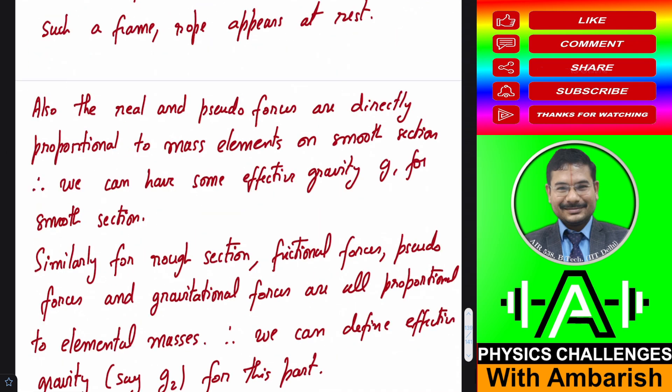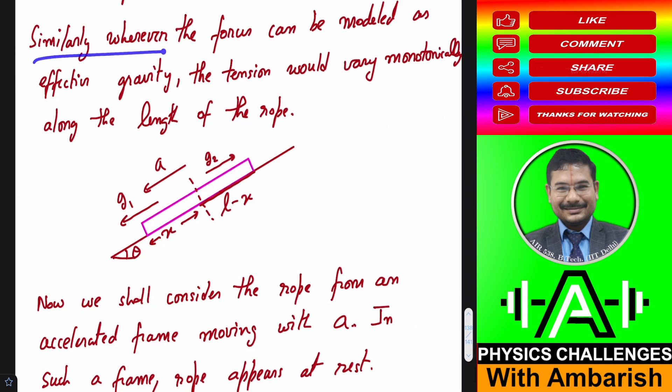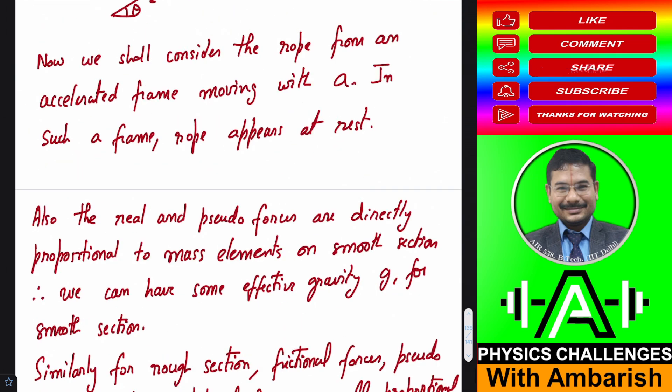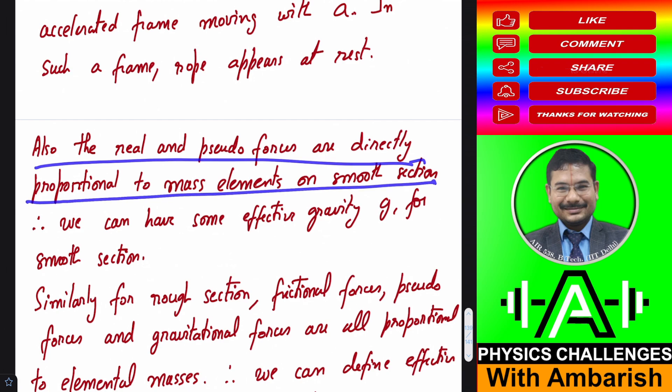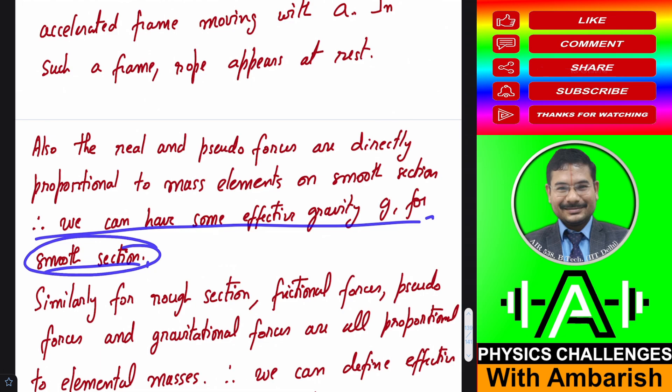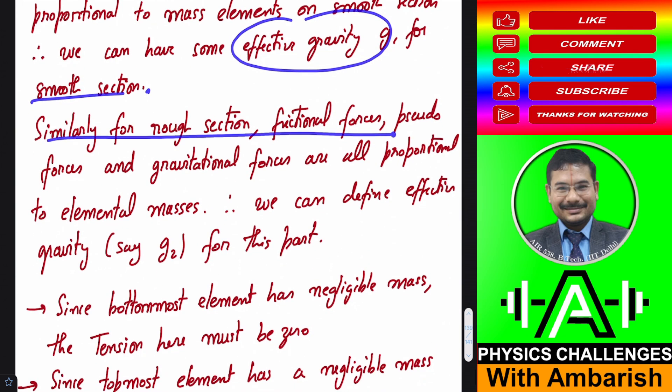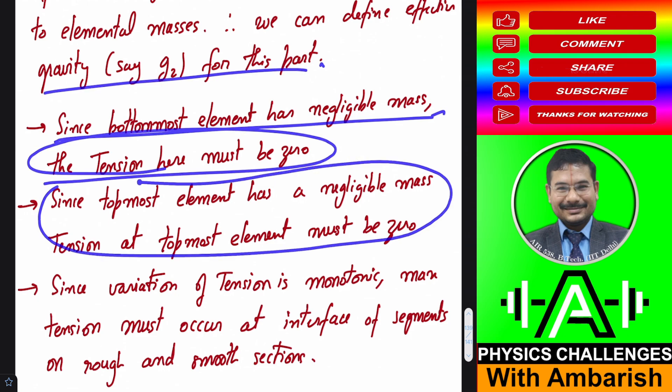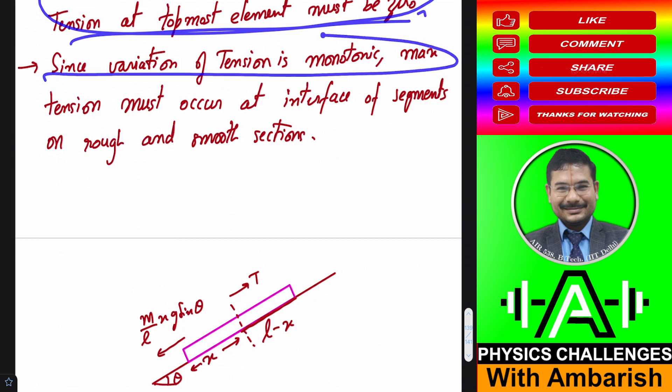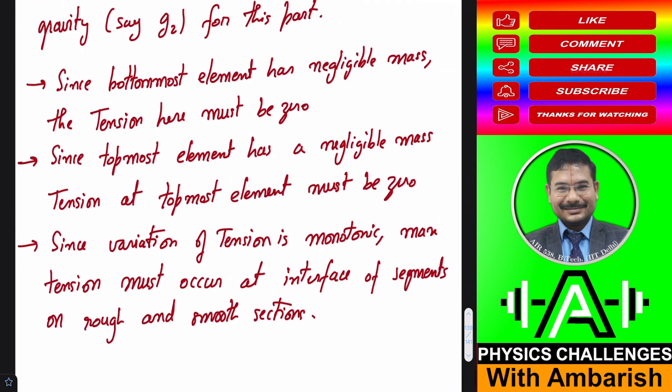So that's what I have written. Whenever forces can be modeled as effective gravity, tension would vary monotonically along the length of the rope. We consider the rope from an accelerated frame moving with acceleration a. The rope appears at rest, and real and pseudo forces are proportional to mass. We can define effective gravity g1 for the smooth section and g2 for the rough part. Since the bottom most and top most elements have negligible mass, the tension at both ends must be zero. Since variation of tension is monotonic, maximum tension must occur at the interface.